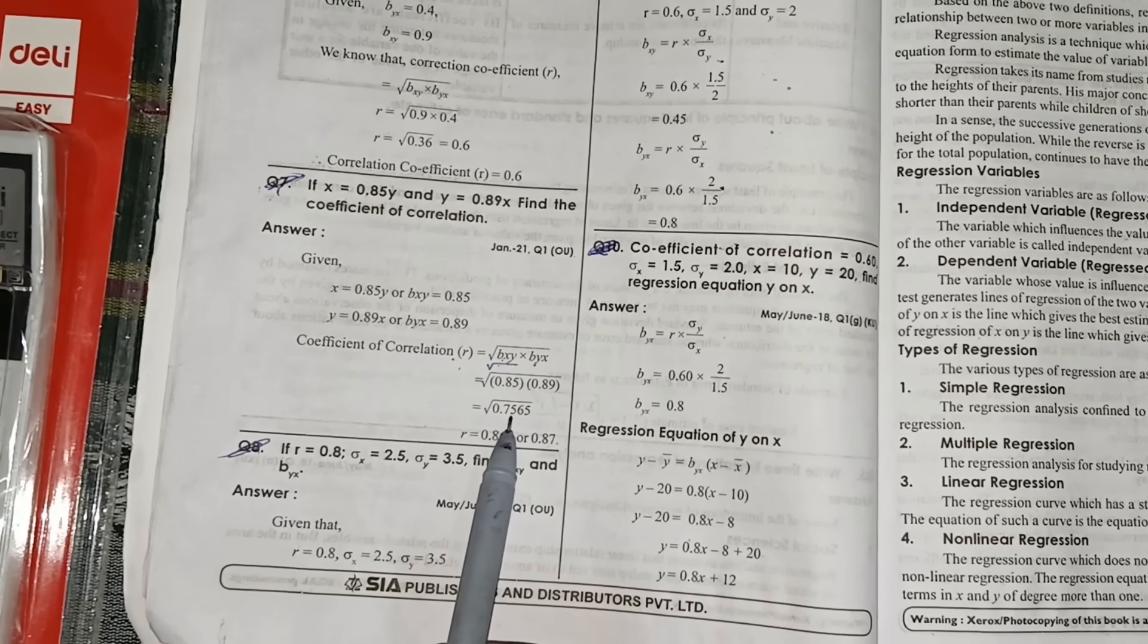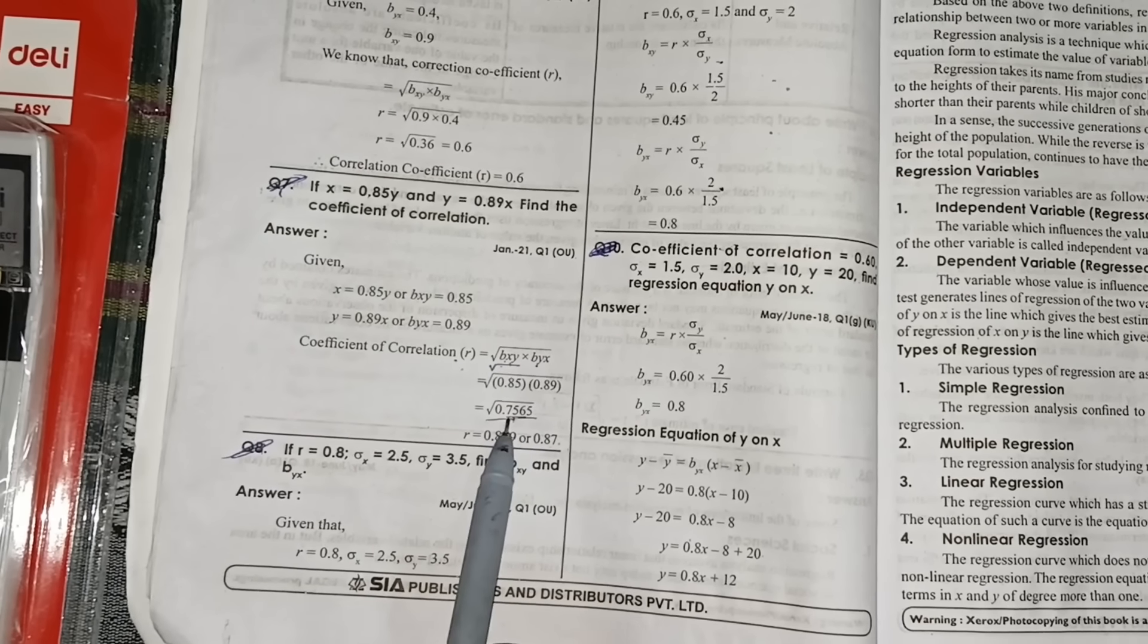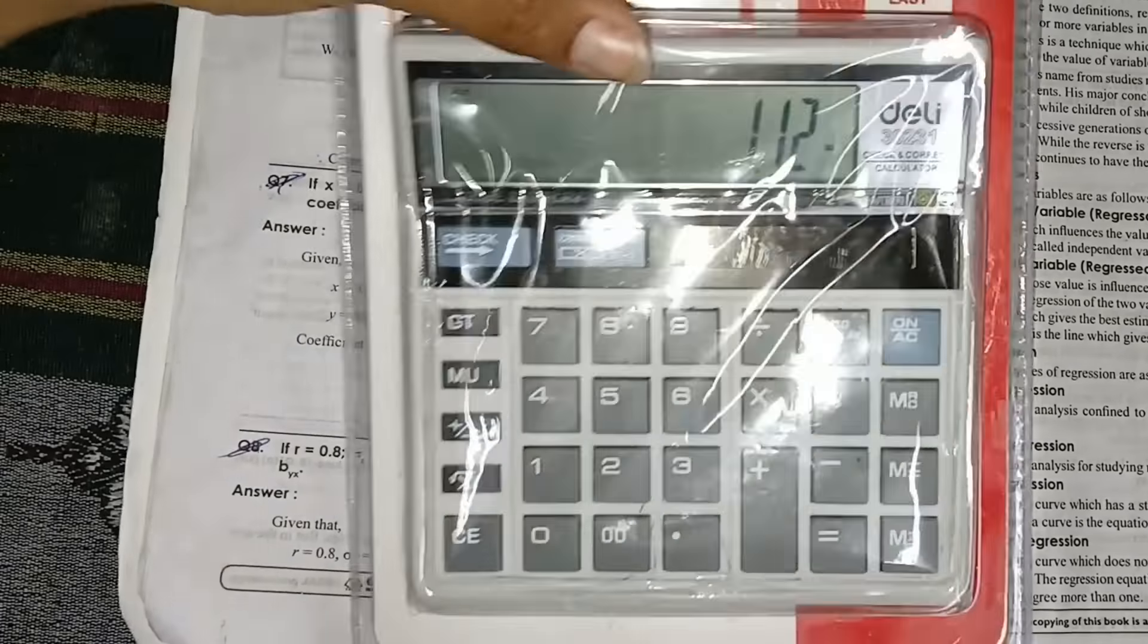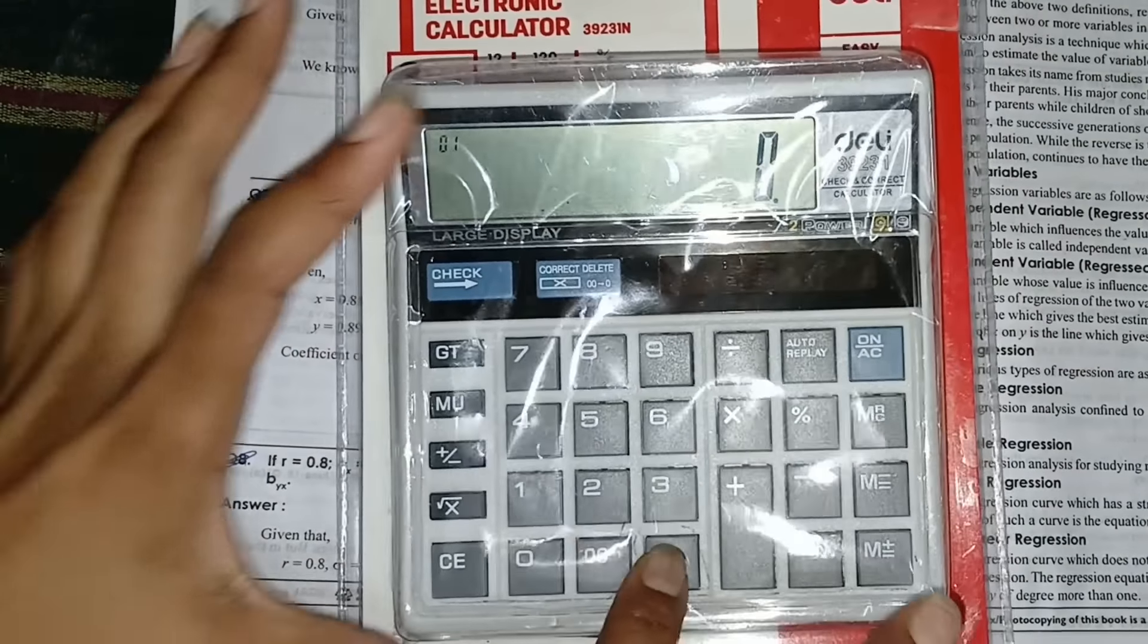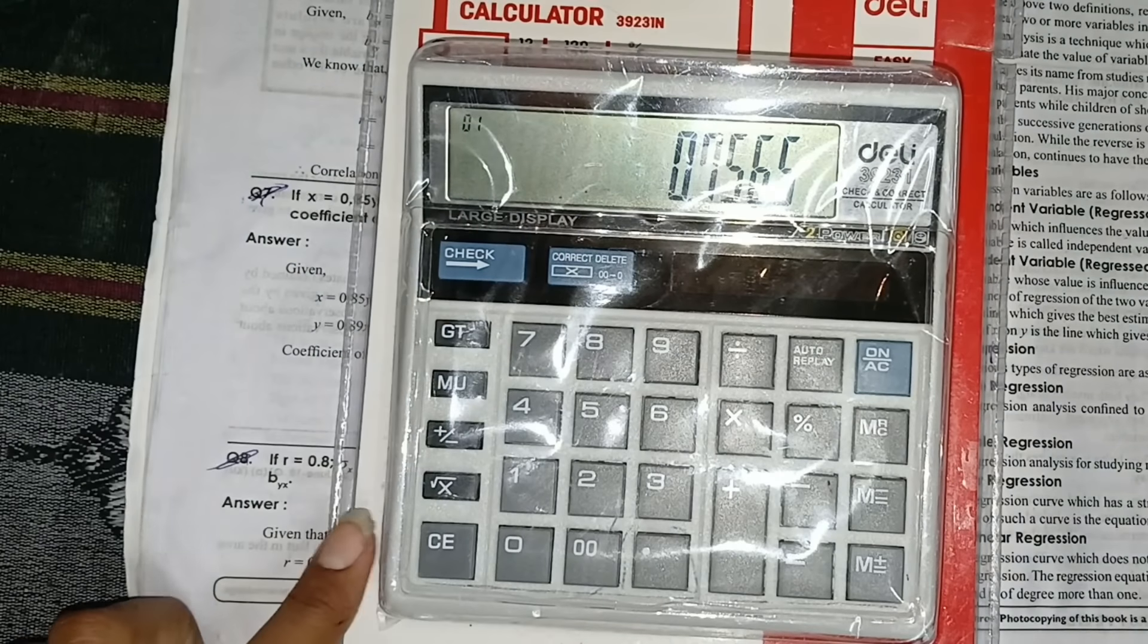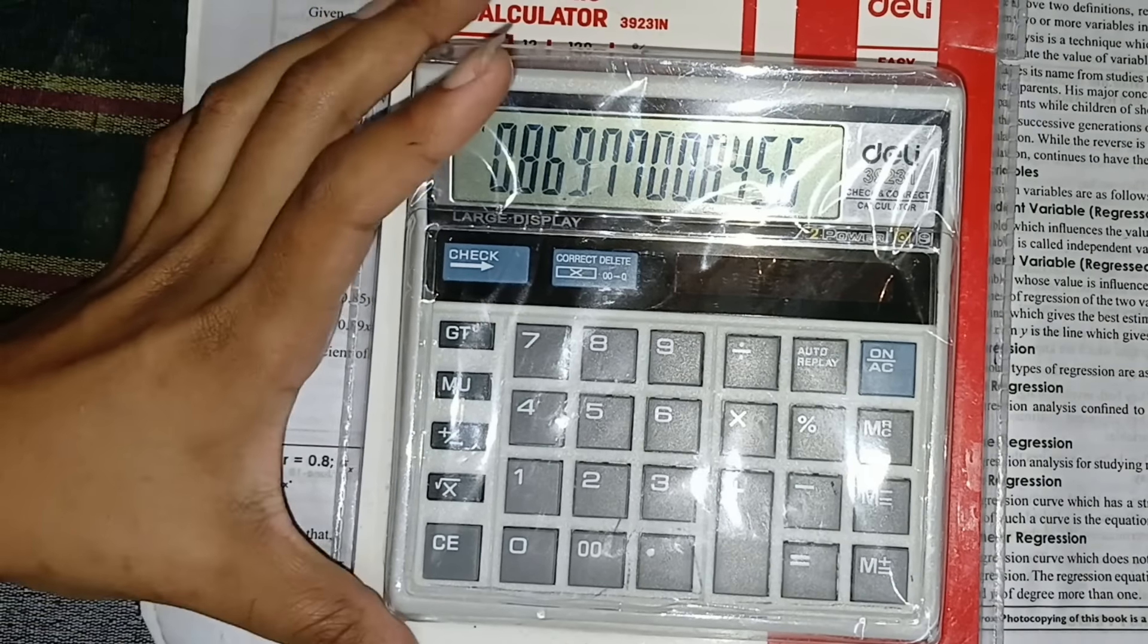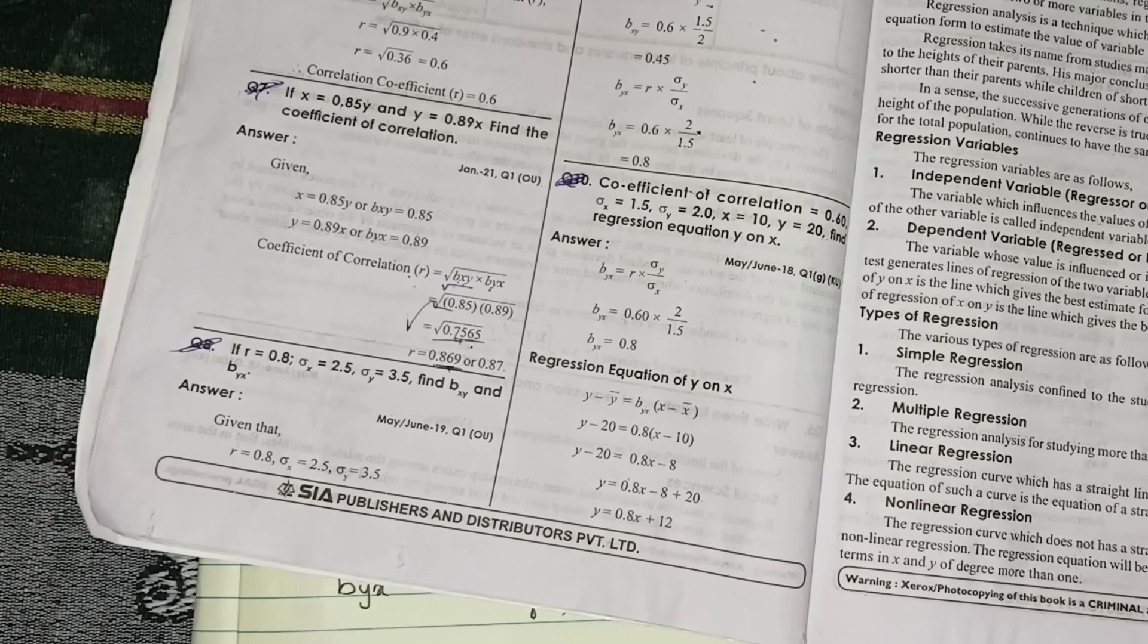0.85 into 0.89 if you do, you will get 0.7565. If you will do root, in calculator where it will be the root, here it is the root. For example, 0.7565 we have got. For this you need to calculate root, just press on root. 0.869, so you have got 0.869.